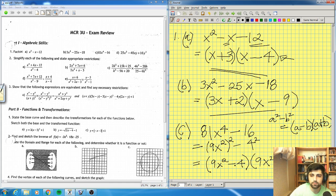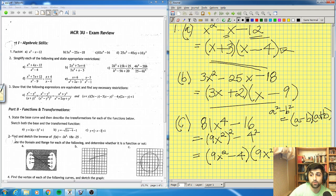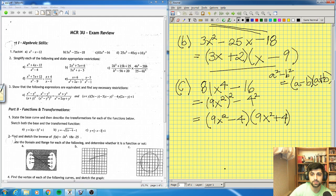Now, 9x squared minus 4 is also a difference of squares, so I can split that further. 9 is 3 squared, x squared is x squared. That can be rewritten as 3x and then 2 squared is 4. So I can rewrite that as 3x minus 2, 3x plus 2, and 9x squared plus 4. And that's that question.